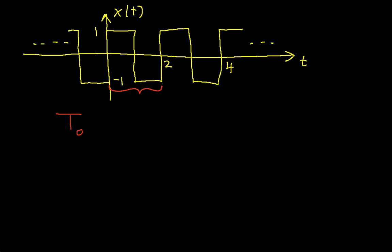If you want to look at a different interval, you can think of starting at time 1, and it goes to time 3 and repeats itself. But in any case, the fundamental period is 2. So our T0 will be equal to 2. We also, at some point, will need to know omega 0, which is equal to 2 pi over T0. So in this case, omega 0 is equal to pi.